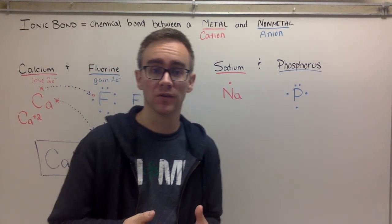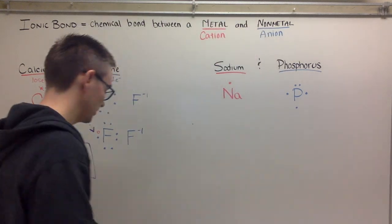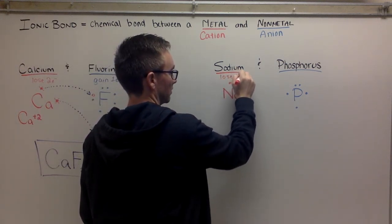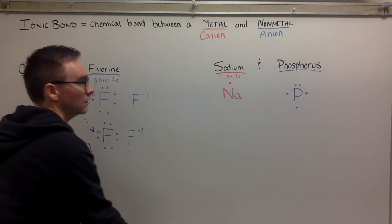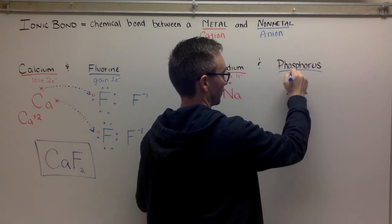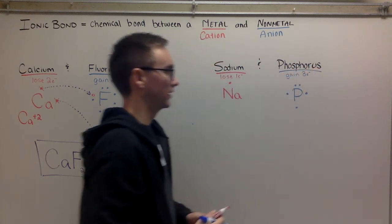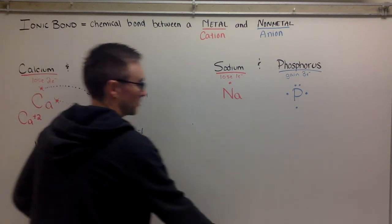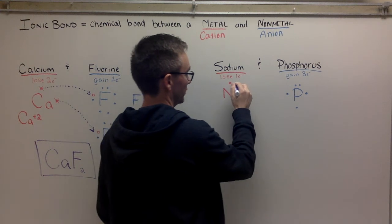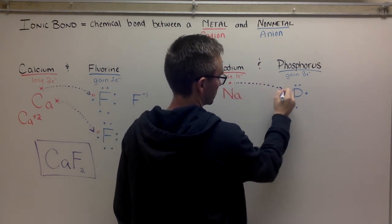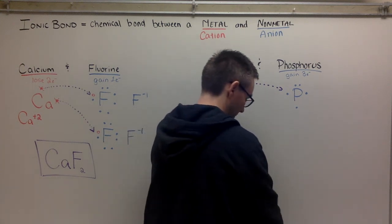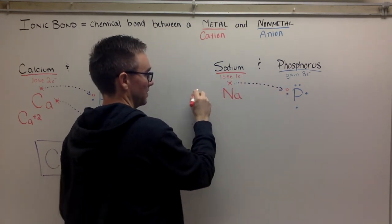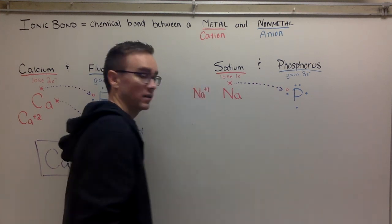Okay, hopefully you've tried it and you started me back up. Let's walk through this — I'm going to go a little faster because we've done this once already. Sodium: think about what each one wants. Sodium wants to lose one electron because it has one valence electron. Phosphorus has five, so it's looking to gain three electrons. The metal is always looking to lose, so sodium gives up his electron to phosphorus. That sodium is now happy — he has formed a sodium plus one cation.